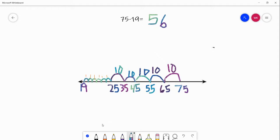And you can also think addition with that one. You could have started at 19, jumped by 10s forward and then jumped by 1s to get to 75, and you could have figured out your answer also.